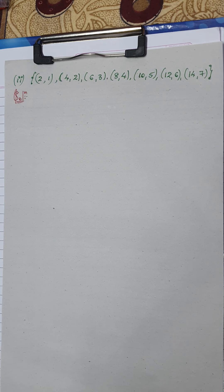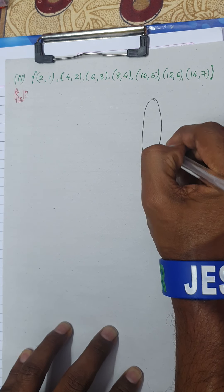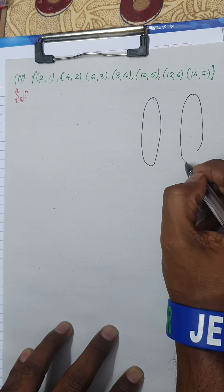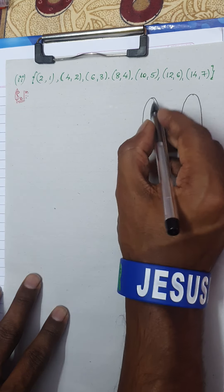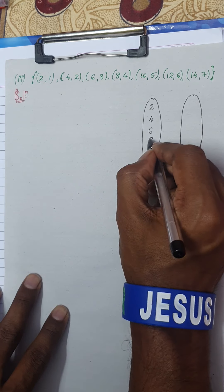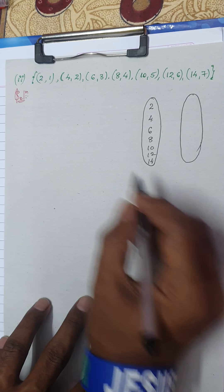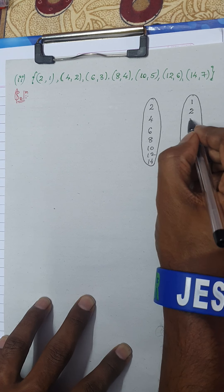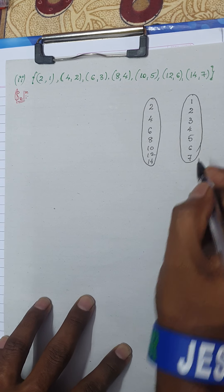Here comes the second question. The relation is given. Let us try to portray this in pictorial representation form. I have taken a domain set and a co-domain set. The first elements are: 2, 4, 6, 8, 10, 12, and 14. The co-domain set is 1, 2, 3, 4, 5, 6, and 7.